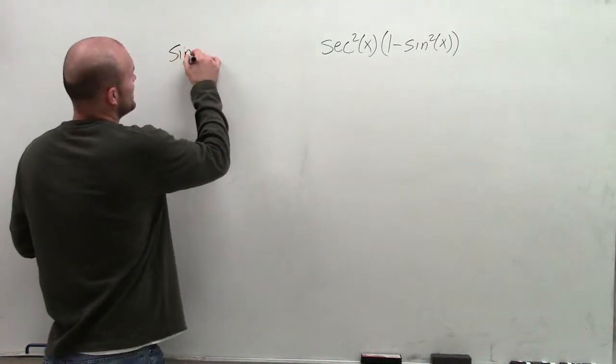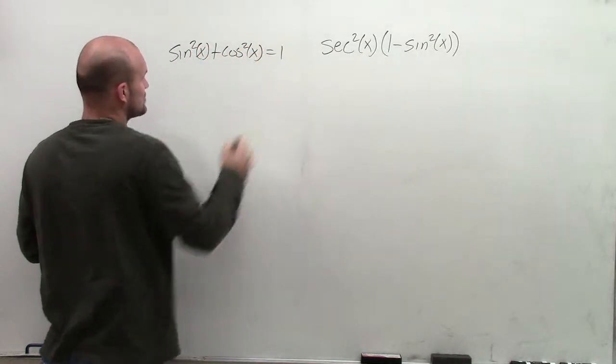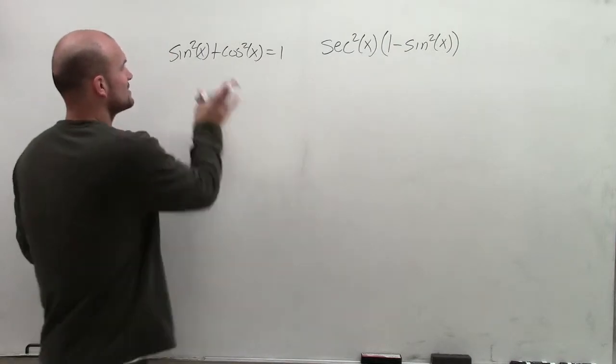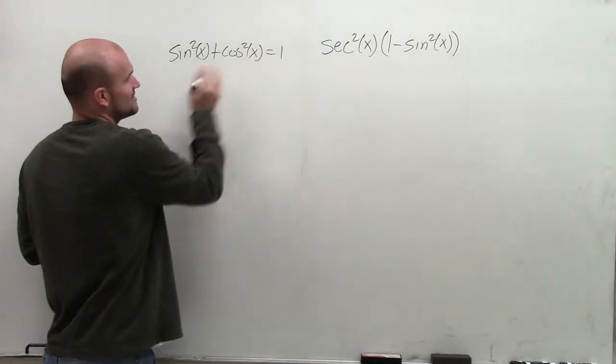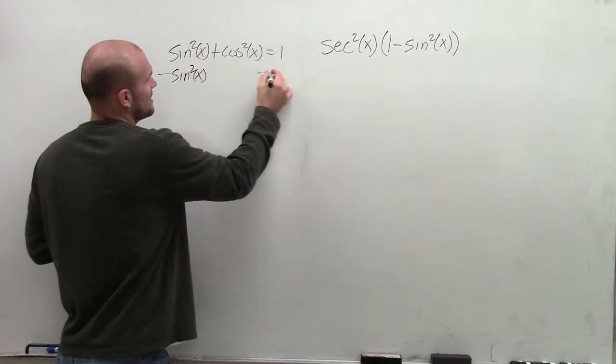So remember that the sine squared of x plus the cosine squared of x equals 1. So therefore, if I was going to solve to get the 1 minus sine squared of x, I would subtract sine squared of x on both sides.